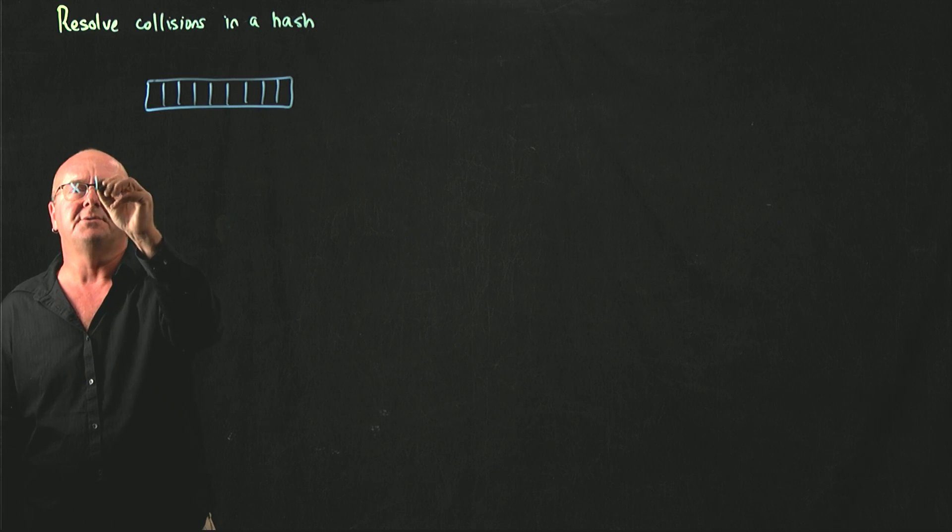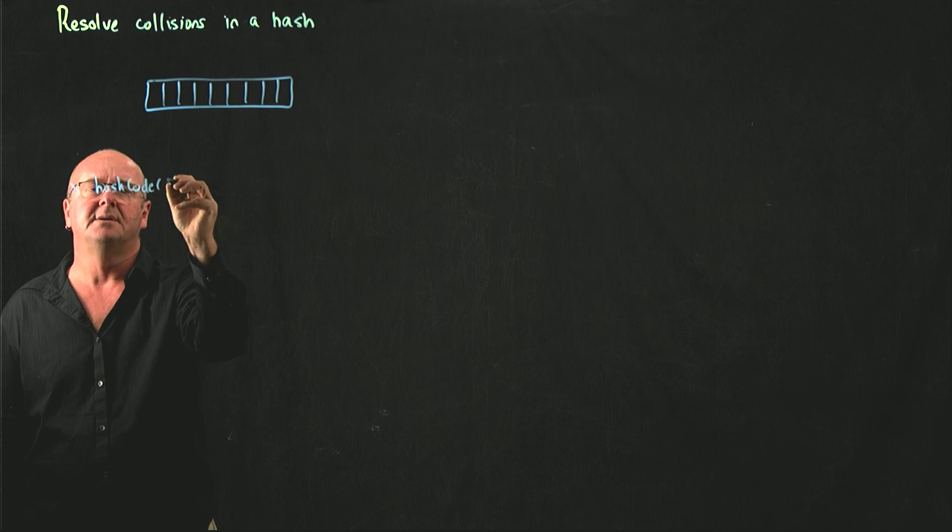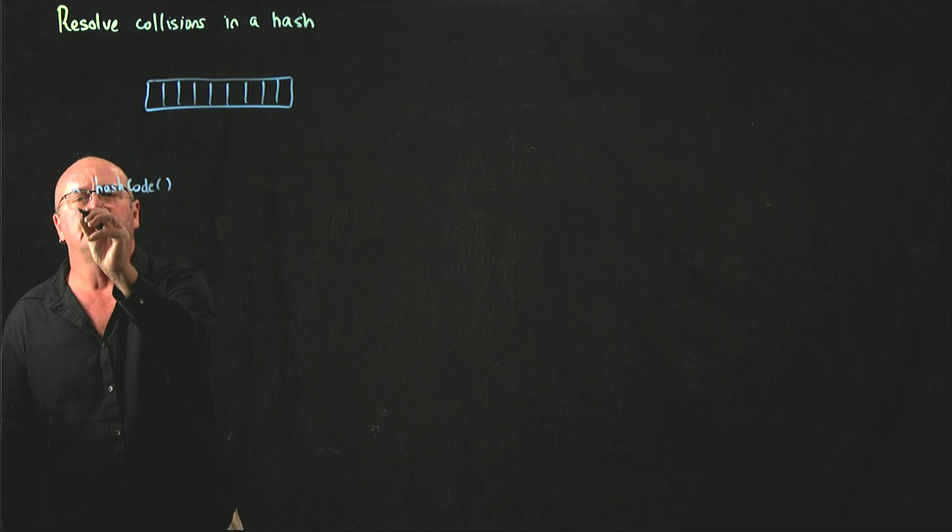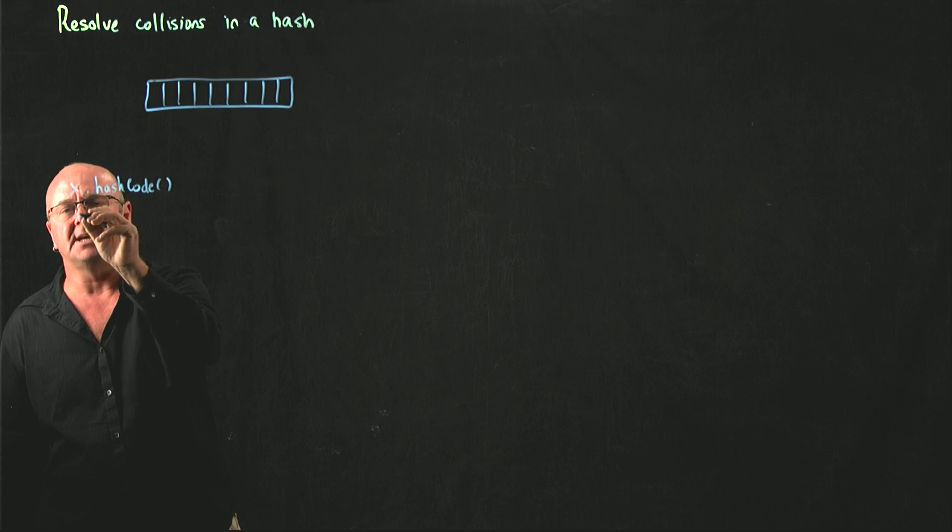As a reminder, we call the hashCode function for x. That gives us an integer. When we get that integer back, we mod it on the table size.